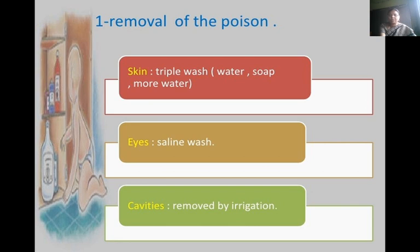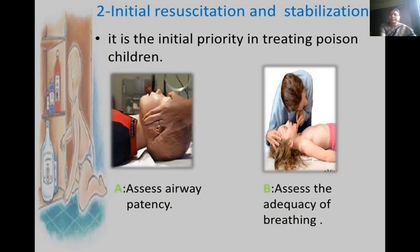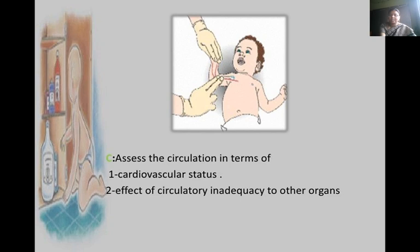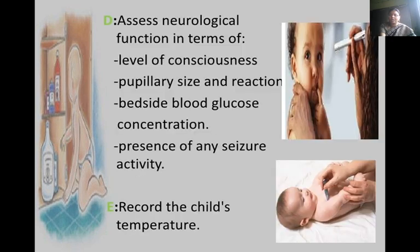For removal of poison from skin, rinse and wash with water and soap or more water; ice, saline wash, and cavities removed by irrigation. Initial resuscitation and stabilization follows the ABC approach: A — assess airway patency; B — assess adequacy of breathing; C — assess circulation in terms of cardiovascular status and circulatory effects on other outcomes.